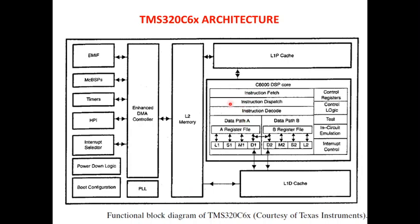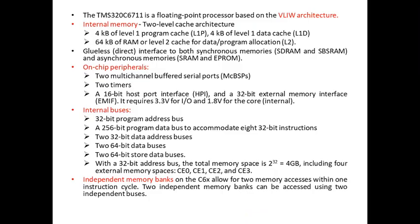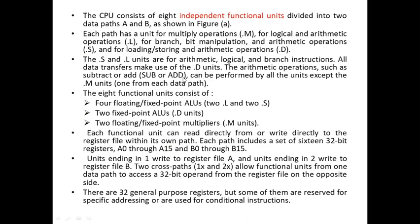There are eight independent functional units — six standard units plus others for C71 — and the data paths are separate: data path A and data path B. Each data path has a separate unit for multiply operation (M), logical operation (L), branch and bit manipulation operation (S), and loading, storing, and arithmetic operation (D).